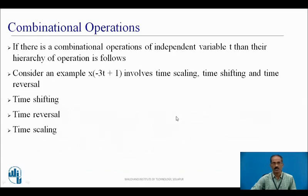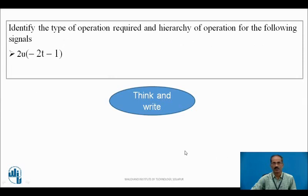There are also combinational operations — combinations of time shifting, time reversal, time scaling, and amplitude scaling. When combining independent variable T operations, a hierarchy of operations must be followed. For example, x(−3t + 1) involves time scaling, time shifting, and time reversal. The hierarchy is: first perform time shifting, then time reversal, then time scaling — and time reversal and time scaling can be interchanged.